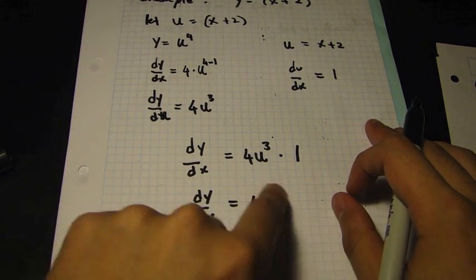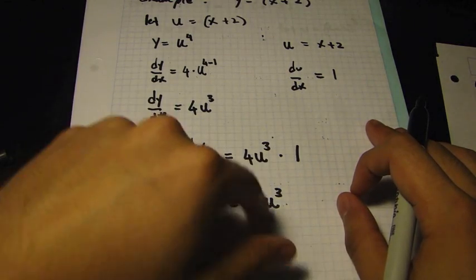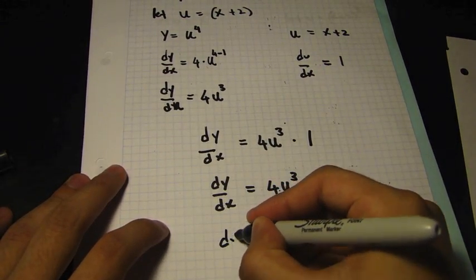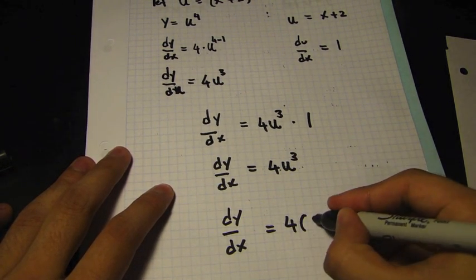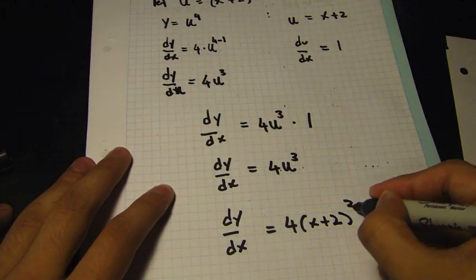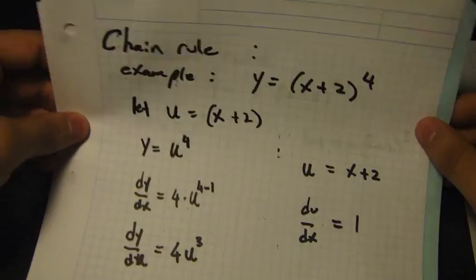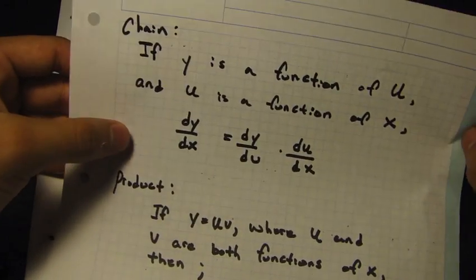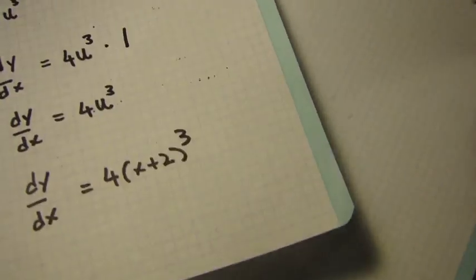Once you get to this point, all you have to do is plug back in u, which was x + 2. So our final answer is dy/dx equals 4(x + 2) to the power of 3. That's basically how you do the chain rule using the formula given in the data booklet.